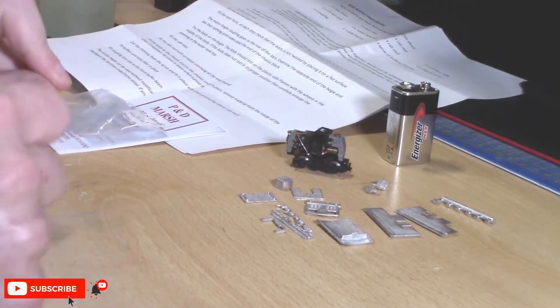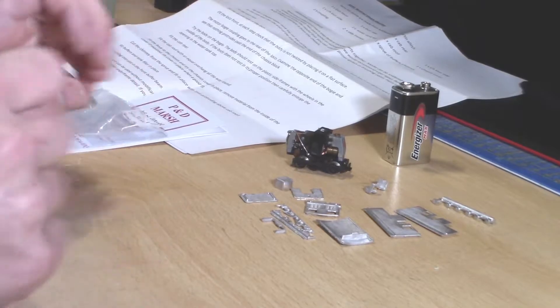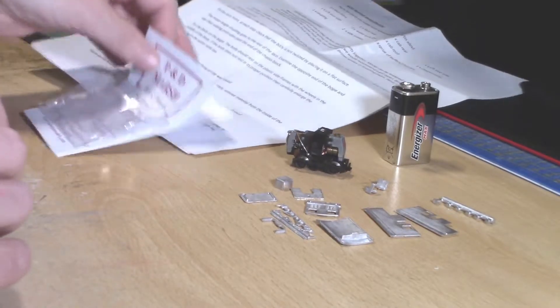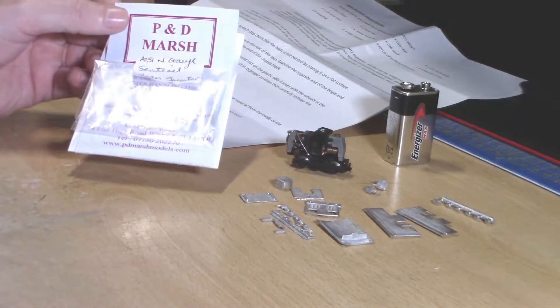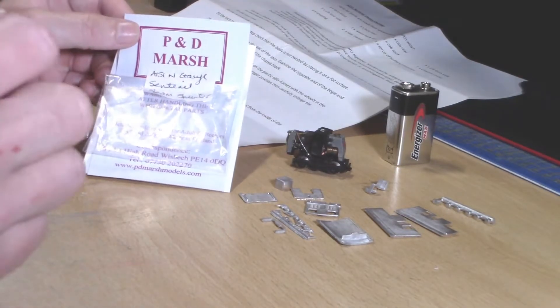Hello everyone and welcome to Gospel Railworks. My name is James and today we are going to have a kit build. This one being the PD Mars LNER Sentinel Shunter, also known as the Y1 or the Y3 class.